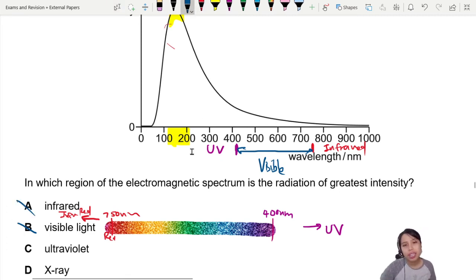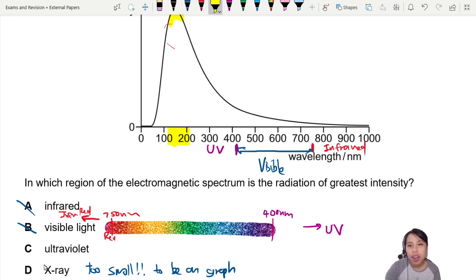Ultraviolet and X-ray. X-ray? I don't think X-ray is such long. This is way too small to be on the chart. Too small to be on the graph. Because we are looking at a scale of nanometers. X-ray is not nanometers. It's much, much, much shorter. So no.